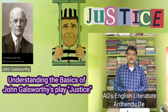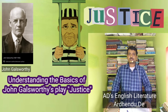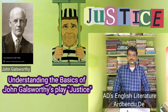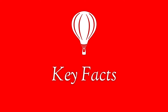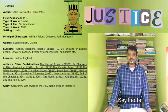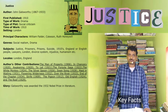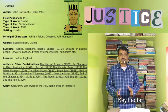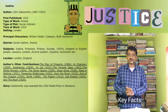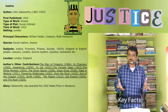Hello, welcome back to my blog, Eddie's English Literature. Today we are going to read John Galsworthy's 'Justice'. We will read this segment with some basic question-answer and analysis on a few basic points. It was first published in 1910. The type of work is drama, the type of plot is social criticism, and the setting is London. The principal characters we will meet are William Falder, Coxon, Ruth Honeywill, and the genre is social realism.